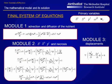The final model equations to be solved are the advection-diffusion equation of the nutrient in module 1, the mass balance equations of the tumor cells, the host cells, the sum of the mass balance equations of the cells and the interstitial fluid, and the mass balance equation of the necrotic cells in module 2. Then we have the linear momentum balance equation of the mixture in module 3.